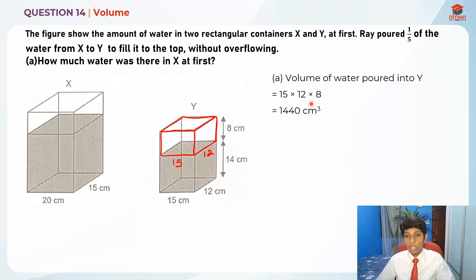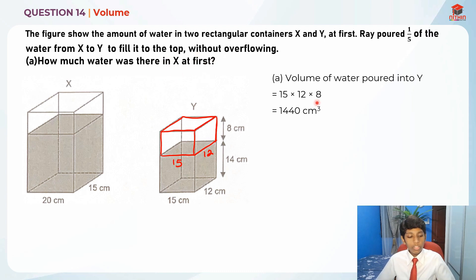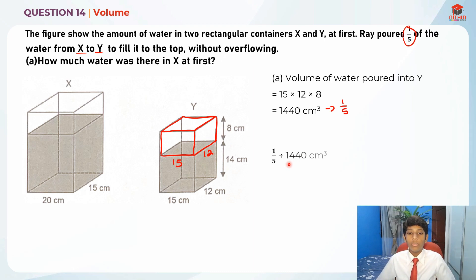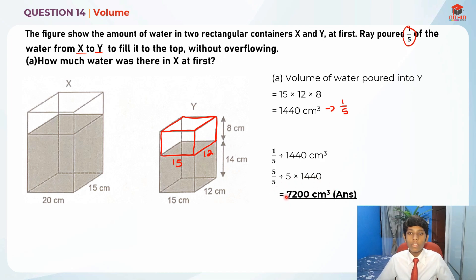So 1440 cm³ is the amount poured into Y. Now, if one-fifth of the water from X equals 1440 cm³, then we can find the total water in X at first, which is 5 out of 5 — so 5 times 1440 — which gives us 7200 cm³. So the answer for part A is 7200 cm³.